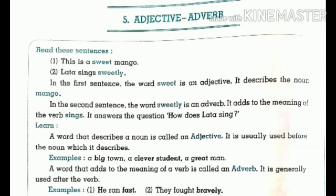When I covered parts of speech, I had a video on adjective and adverb with definitions. So you know what an adjective is — it describes our noun. Here, our noun is 'mango.' How is the mango? It is sweet. So 'sweet' is our adjective because it gives us information about the noun.